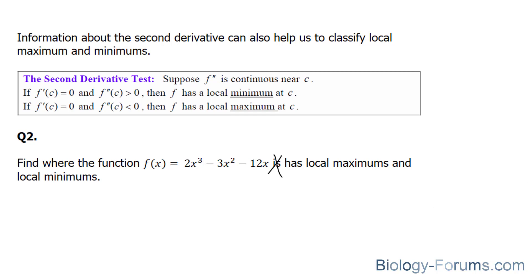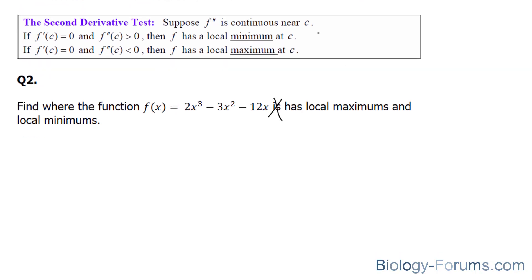So what we'll do is find out the c values. And the way we find out the c values, we've already done this in part 1 of the video, is you find the first derivative, set it equal to 0, and find your x's. And we learned that our x's from that first part were x equals negative 1 and x equals positive 2.